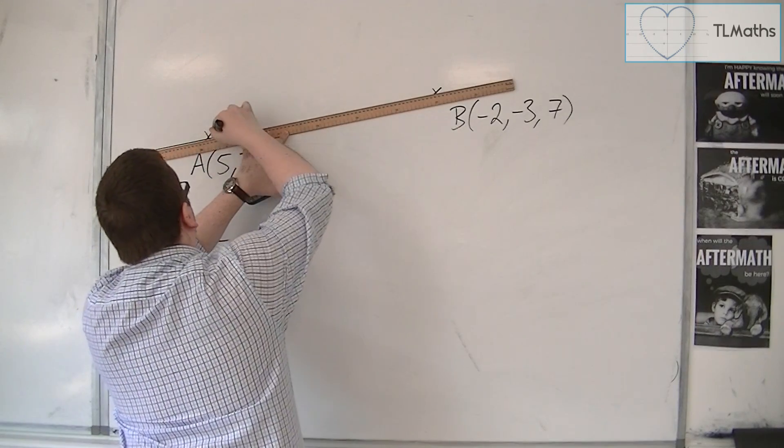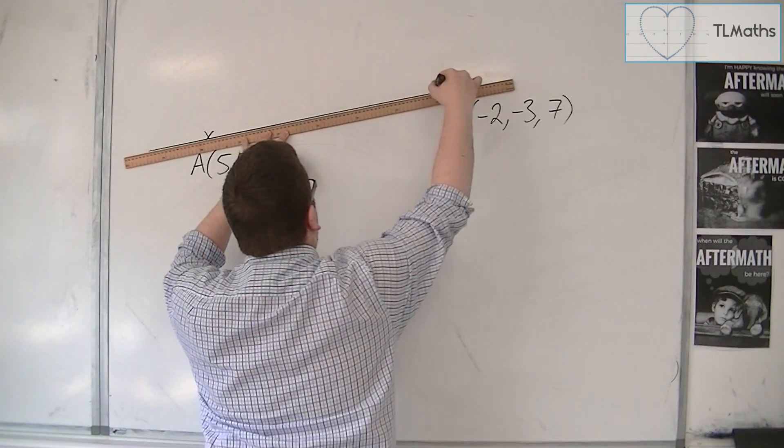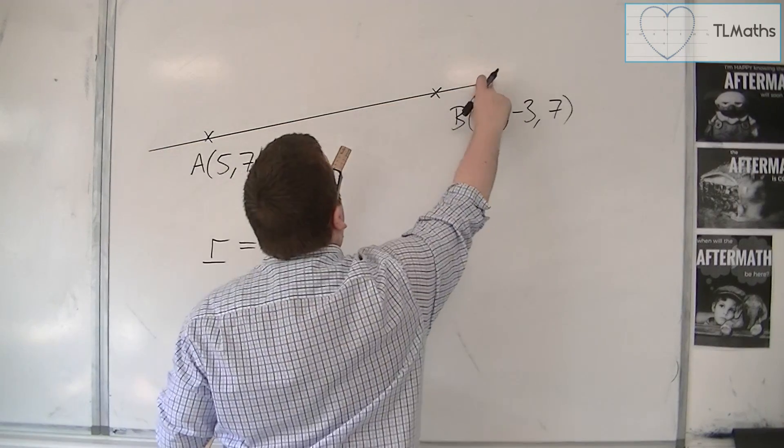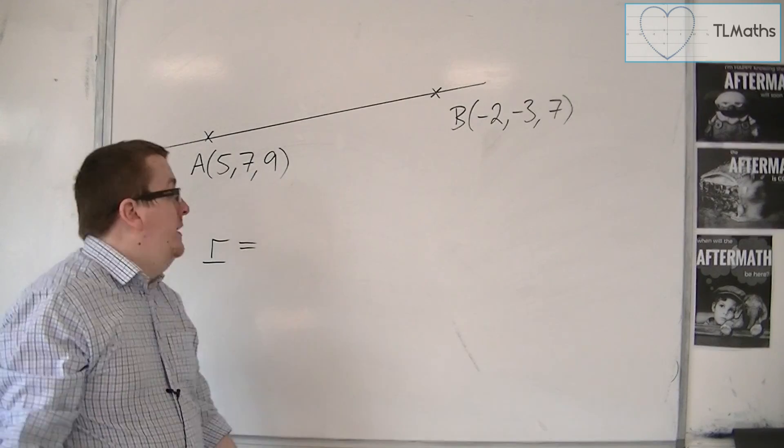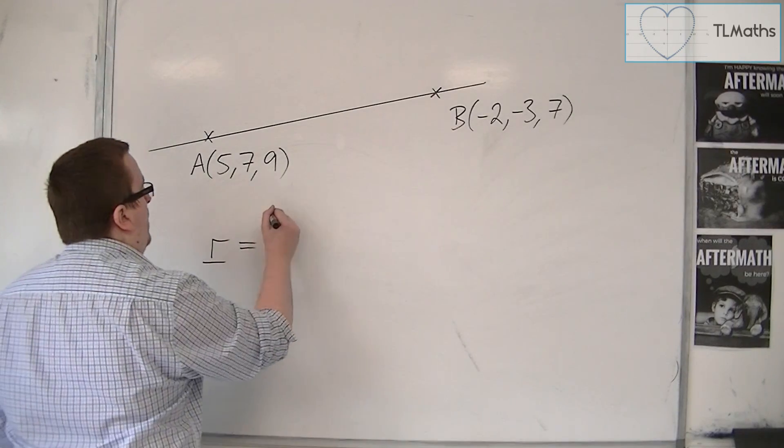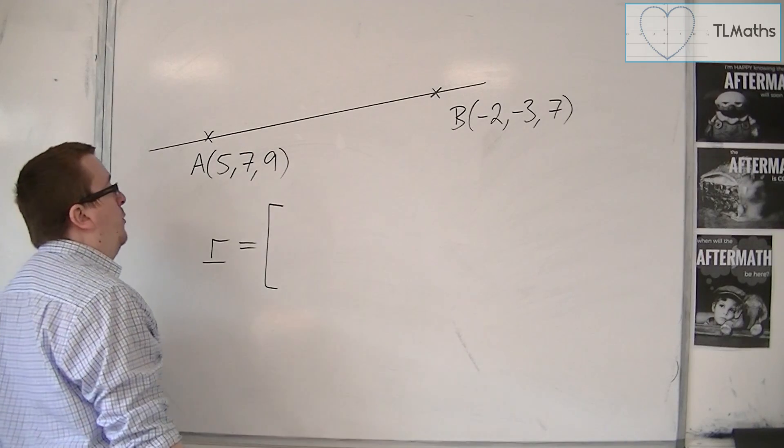then we actually have two choices. We could either use A or we could use B. It doesn't really matter, but we use the position vector of one of these two coordinates.